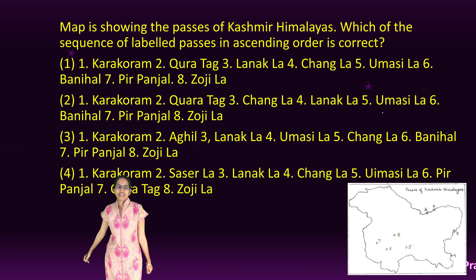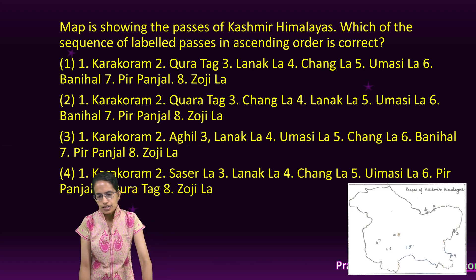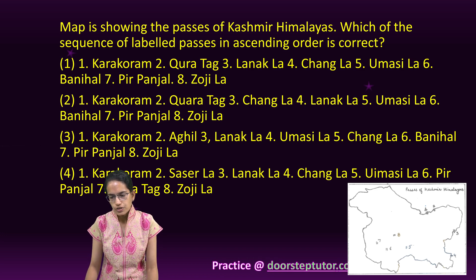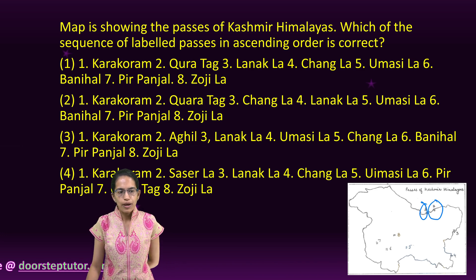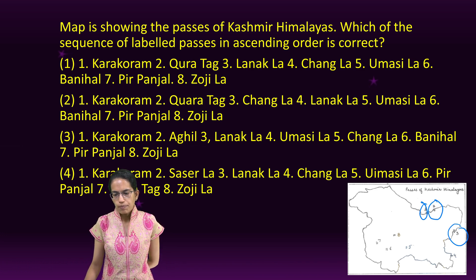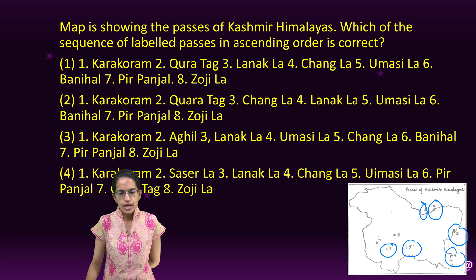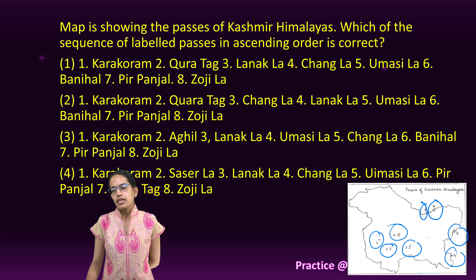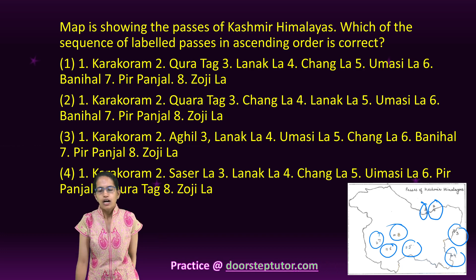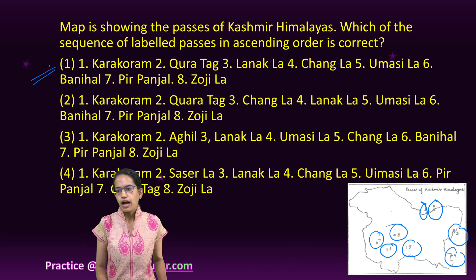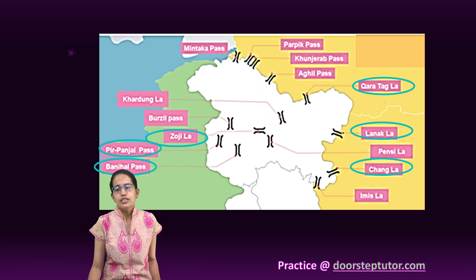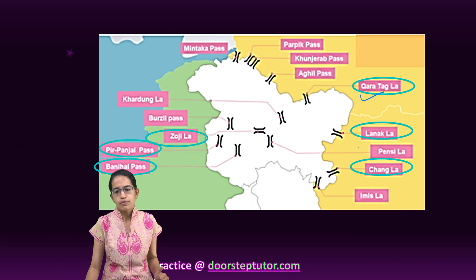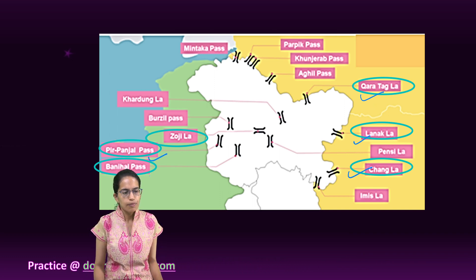The next is a very interesting question. You have the markings for the various passes of Kashmir and you have to identify which pass is in the correct order. The first one here is the Karakoram pass, followed by the Quara Tag, then you have the Lanak La, Chang La pass, the next one is the Umasi, followed by Banihal, Pir Panjal, and then Zoji La pass in the region of Ladakh. Here we have the correct order of the sequence, which is option 1.